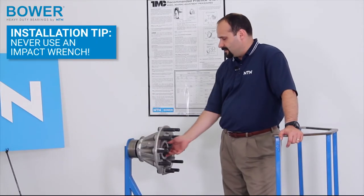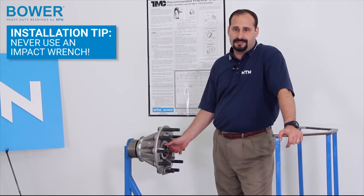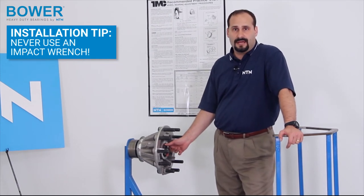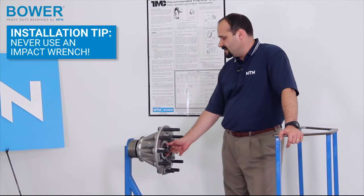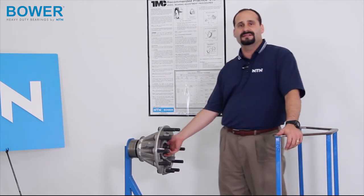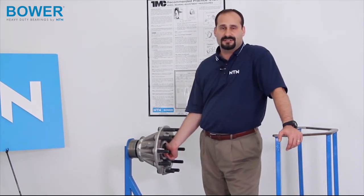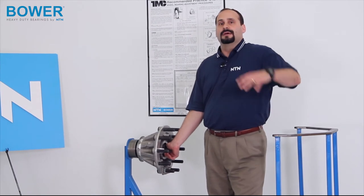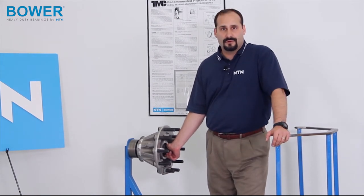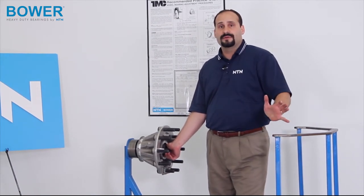The big note here, at no point should we ever use an impact wrench for mounting this wheel hub. Should always be done by hand. The idea behind that is the impact wrench can tighten stuff on so quickly, you can actually damage the bearings before you even get the truck out on the road. So we never want to use an impact wrench when we go about doing this.